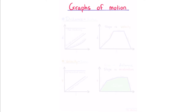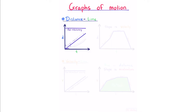Graphs of motion. Here we're going to look at two types of graph. First, a distance-time graph has distance on the y-axis and time on the x-axis. A flat line means the distance isn't changing, so a flat line means stationary. A straight line means distance is increasing at a constant rate, so a straight line means constant velocity. A curved line means the rate of change is also changing, so a curved line means acceleration. For a distance-time graph, slope is velocity — the steeper the slope, the higher the velocity.